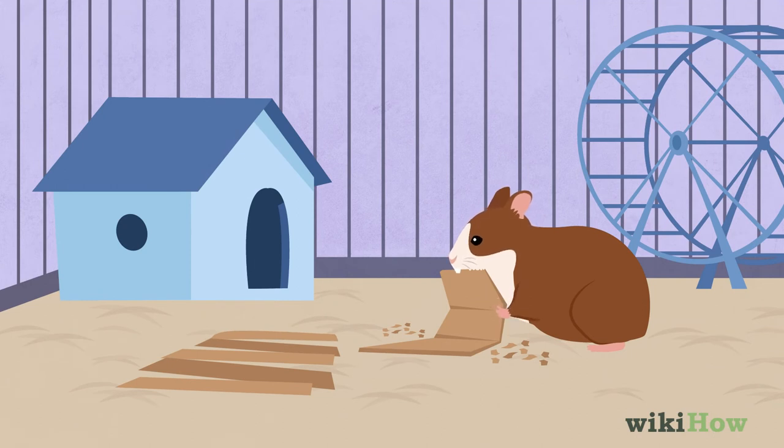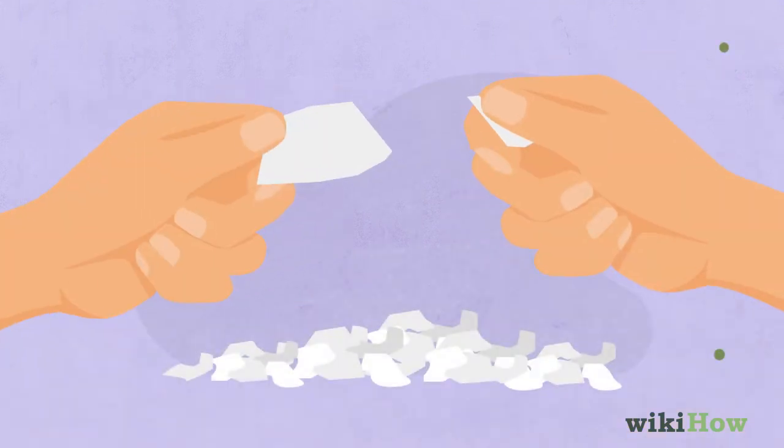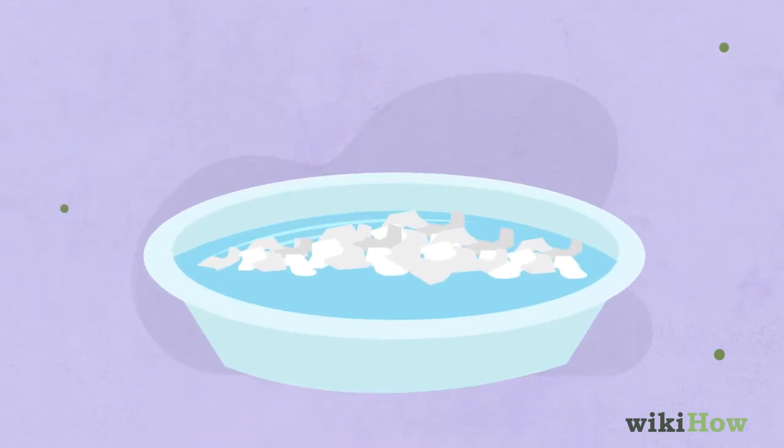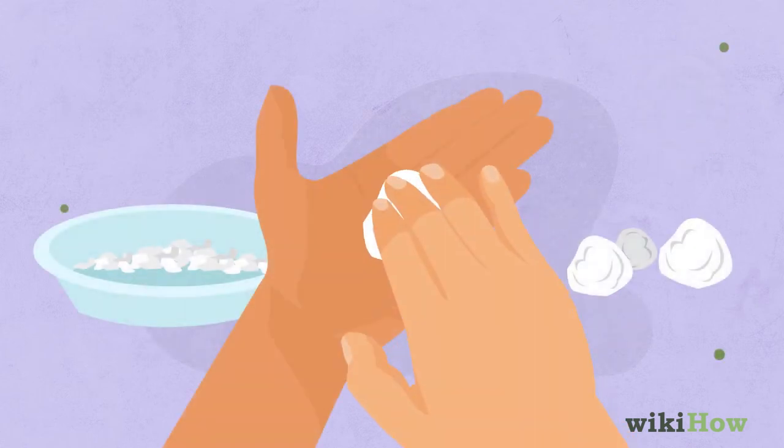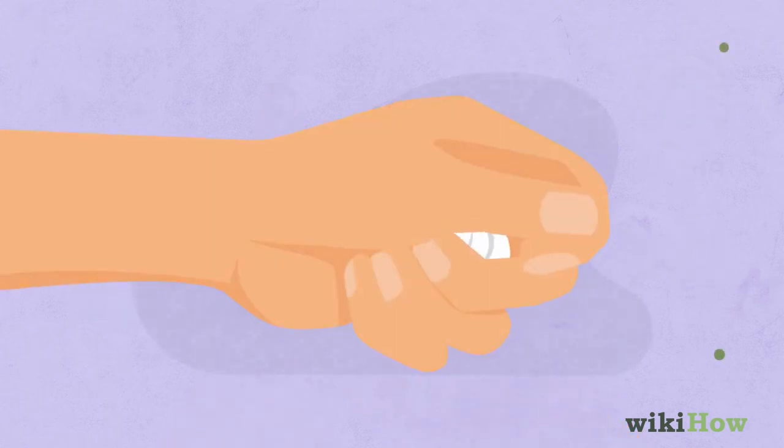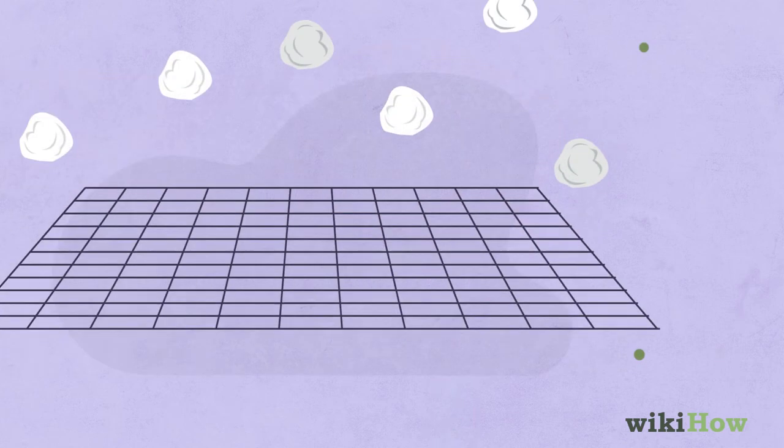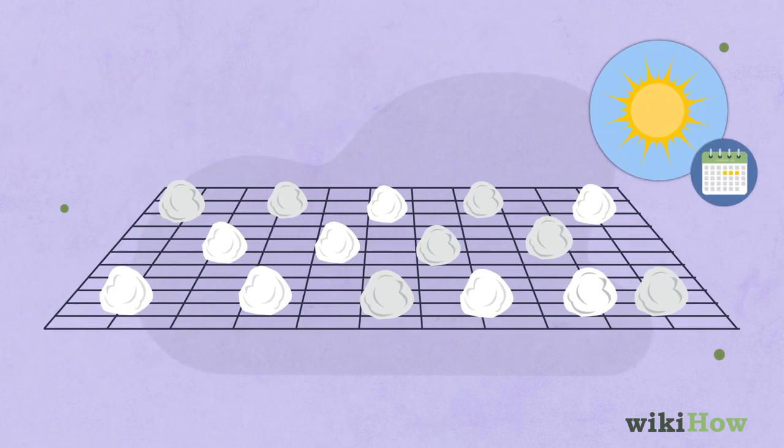To make softer hamster bedding, shred some white paper into small pieces and soak it in water for about 5 minutes to make a pulp. Drain the water and form the paper pulp into balls. Squeeze out as much excess water as possible and set them on a wire rack in a dry place for a few days.